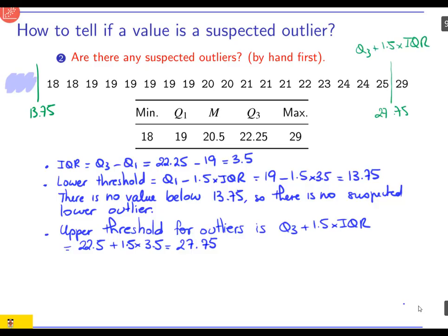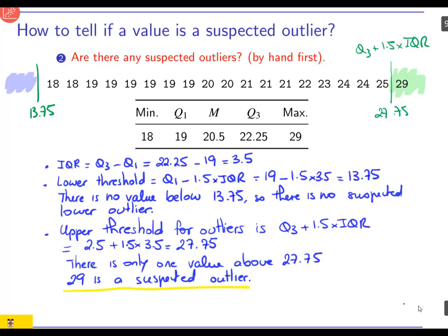So really that is third quartile plus 1.5 times the interquartile range. And as we said, anything above that would be considered a suspected outlier. So we found one. 29 is a suspected outlier. So 29 is a suspected upper outlier and there's no suspected lower outlier.